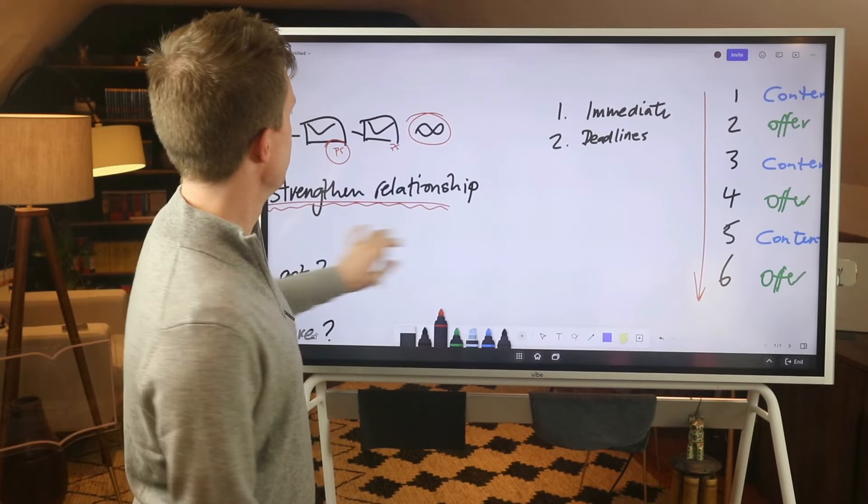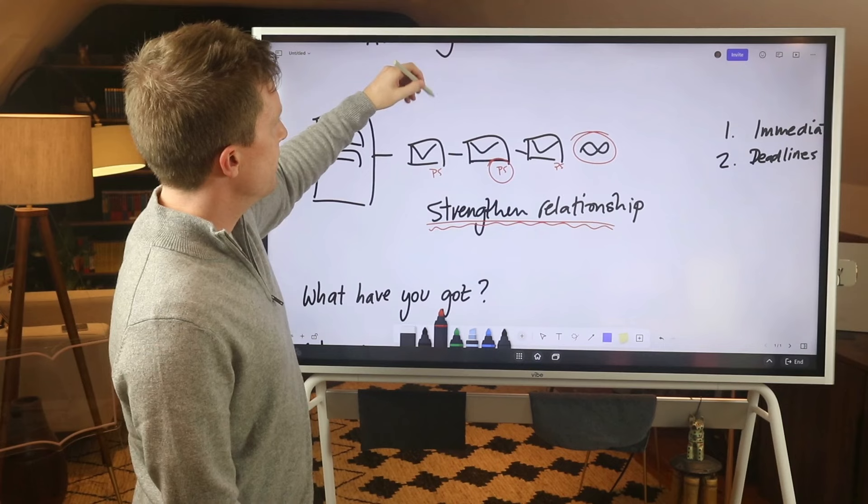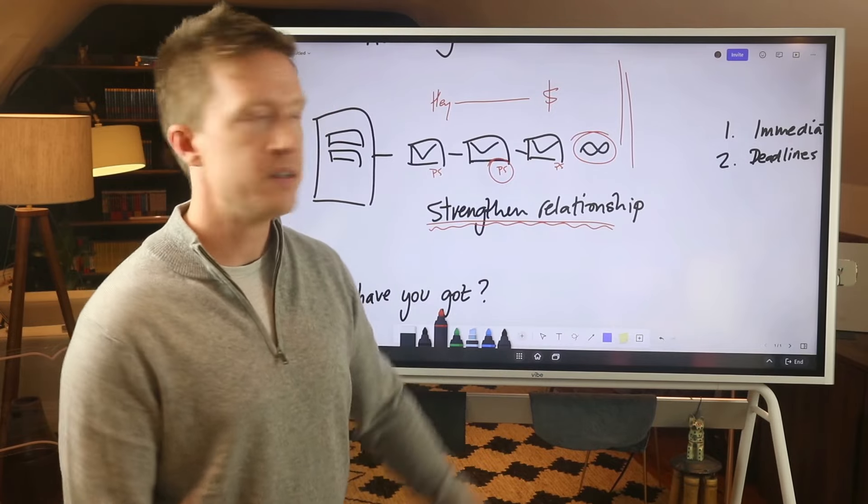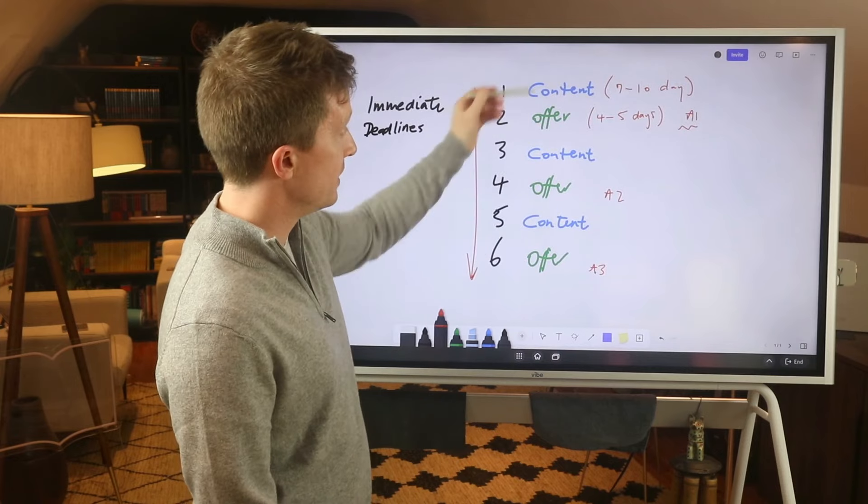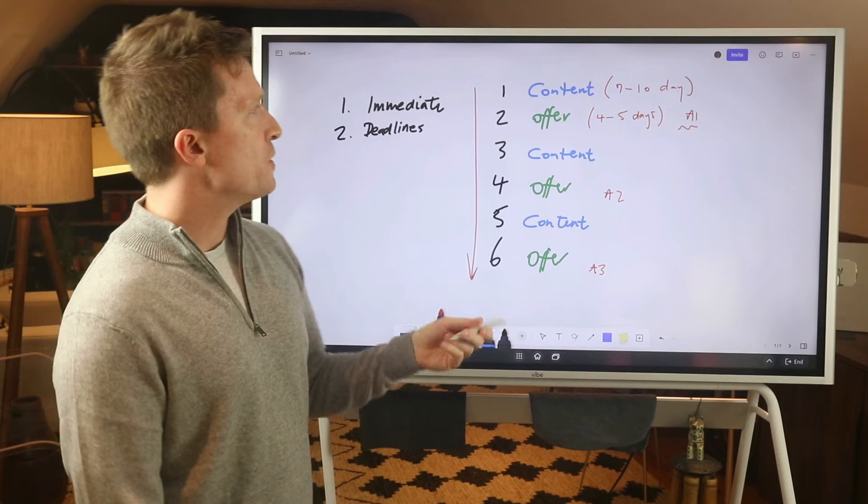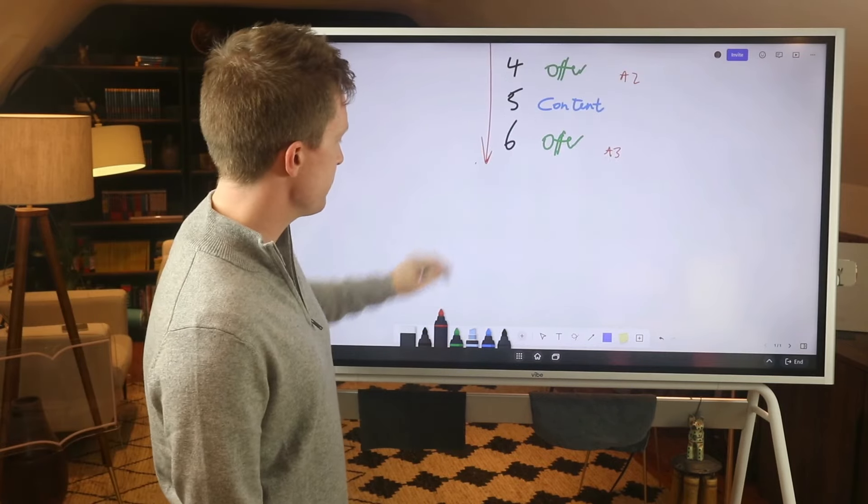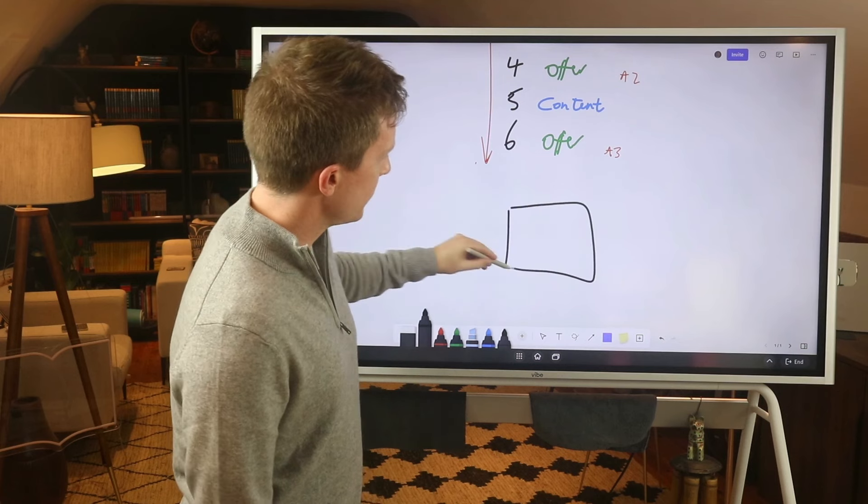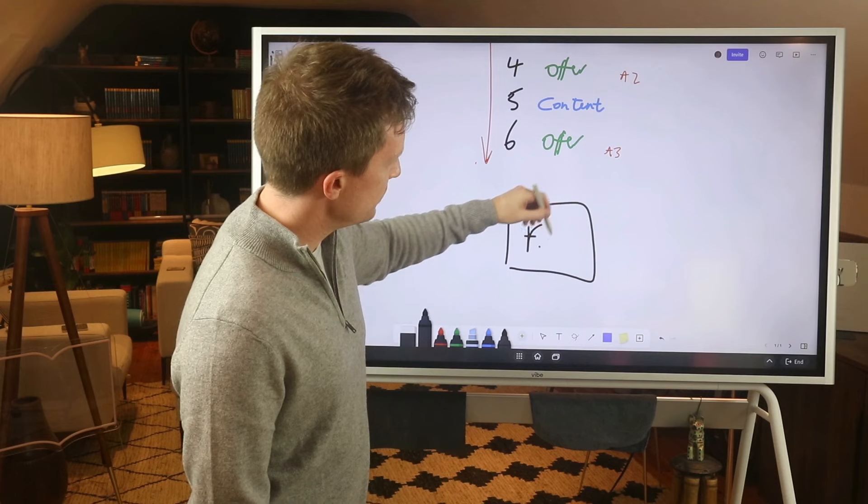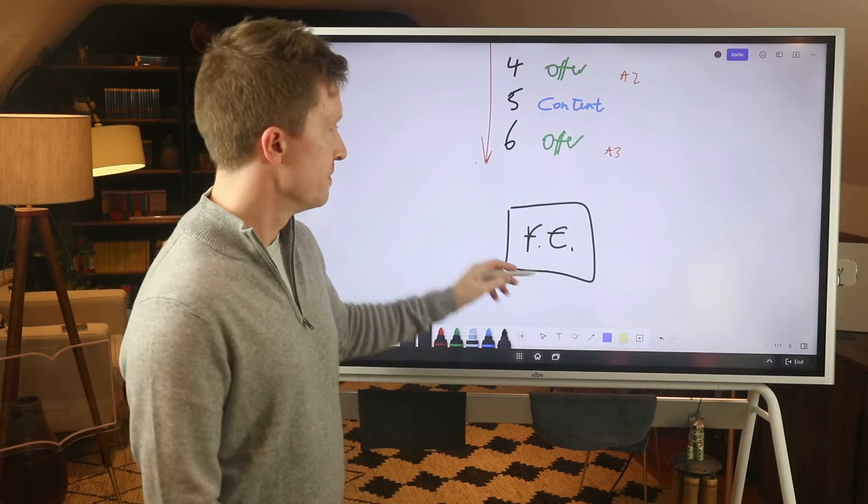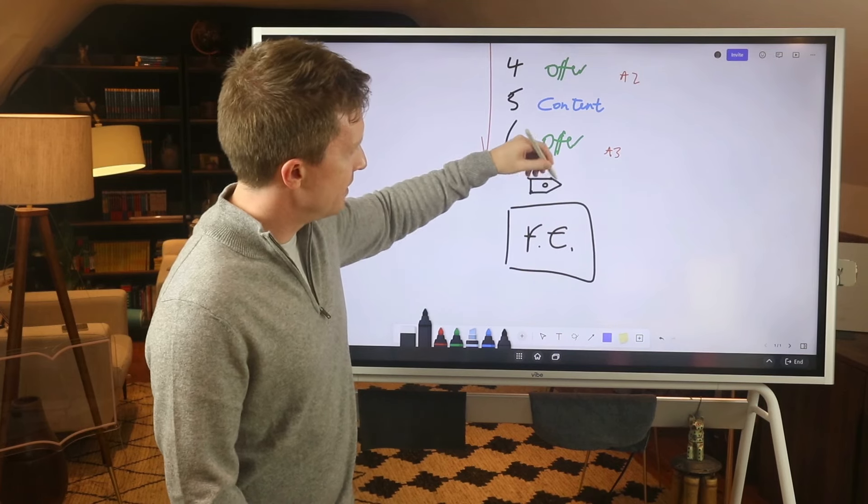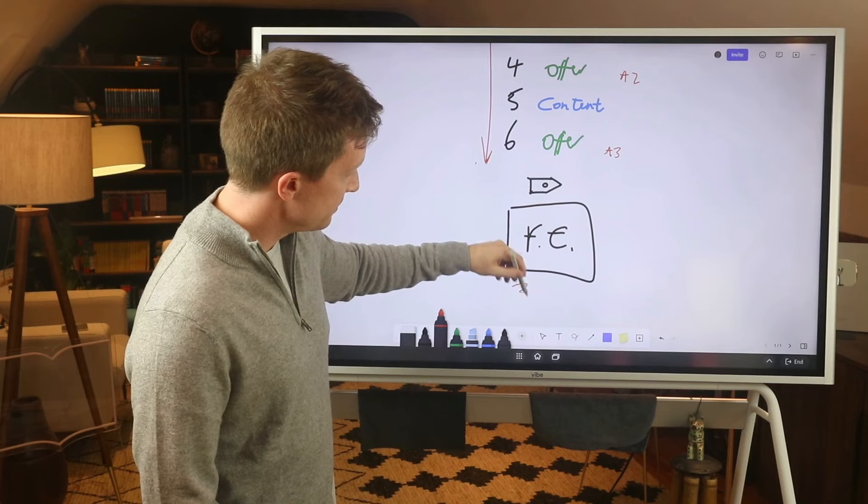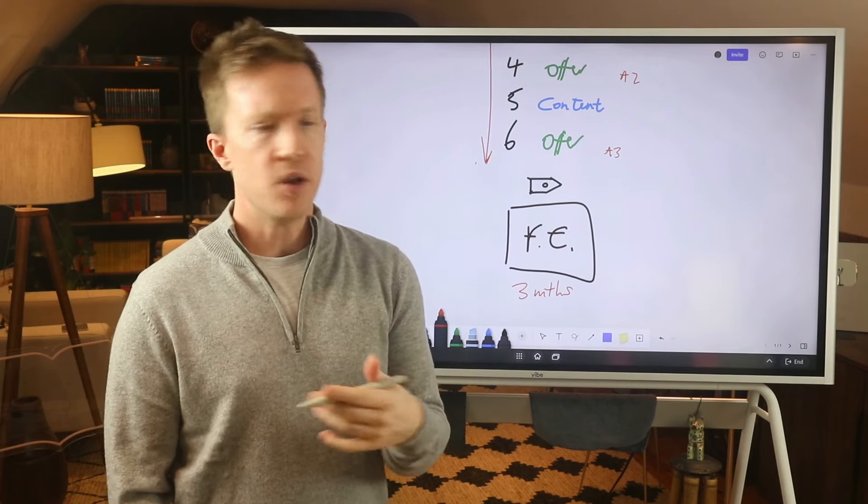The problem with so many people's seven day welcome sequence is just like, hey, for seven days and then buy now and then nothing, brick wall. That's just such a simplistic way of doing business. Instead, we want to just develop that relationship, keep providing quality content and then regularly add offers. In our case, what we do is we have like 90 days of automated emails.